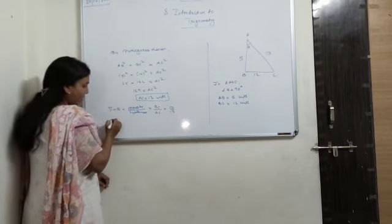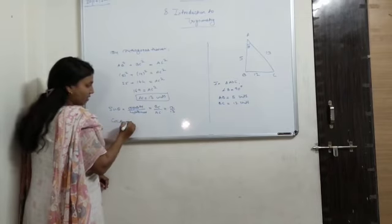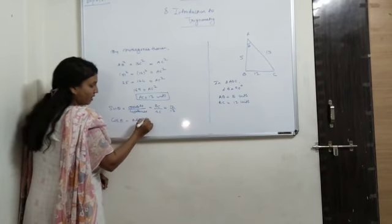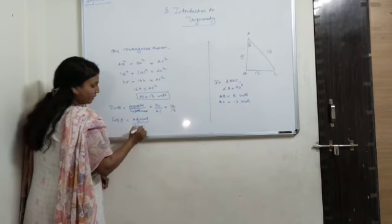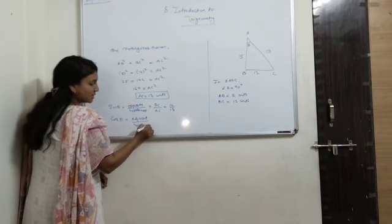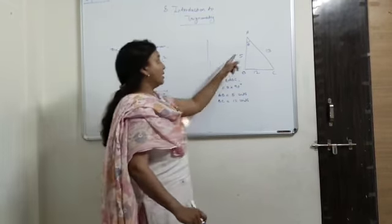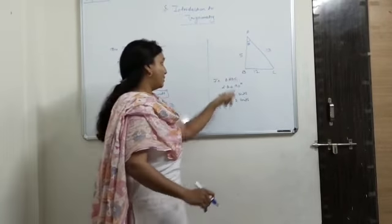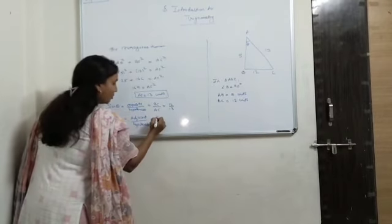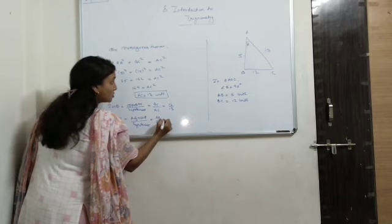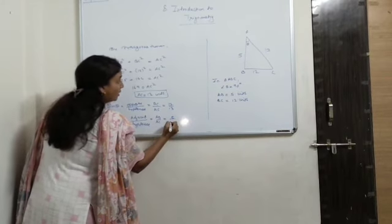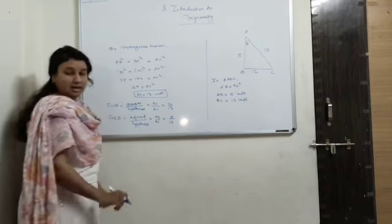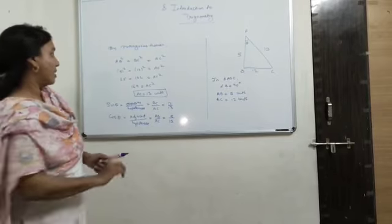Now, I have to find cos theta. Again, the formula is what? Adjacent upon hypotenuse. So, you have to see the adjacent side of the theta, that is AB. So, AB upon AC, which is equal to 5 upon 13. Again, now lastly, tan theta we have to find.